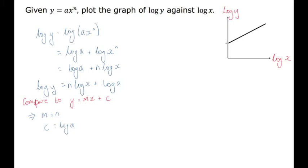So on my log graph, I can say, well, I know that the gradient, so my gradient is going to equal n. And I know that my intercept here, my y-intercept, which is c, is going to be log a. It crosses the y-axis at log a.